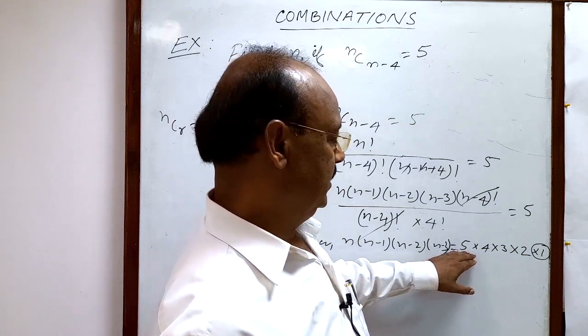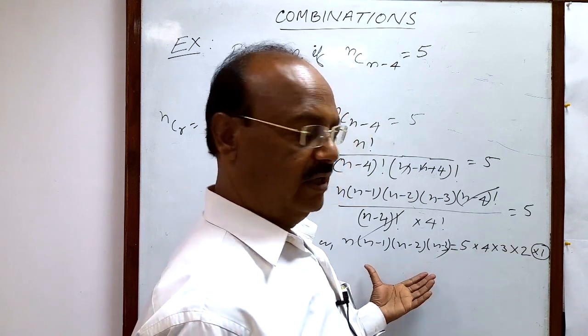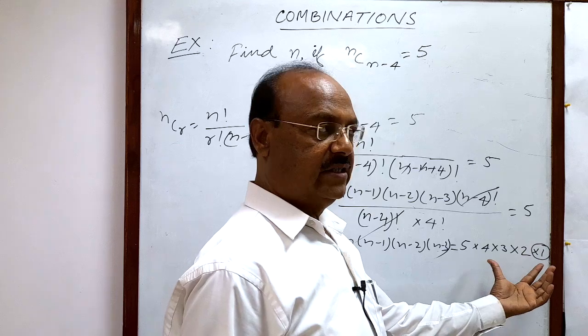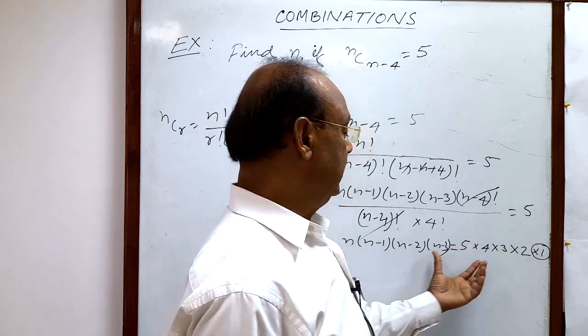Here also, these numbers are decreasing by 1: 5, 4, 3, 2. Four factors on the left side, four factors on the right side. Here the number is decreasing by 1, here also the number is decreasing by 1. So we can compare both sides directly.